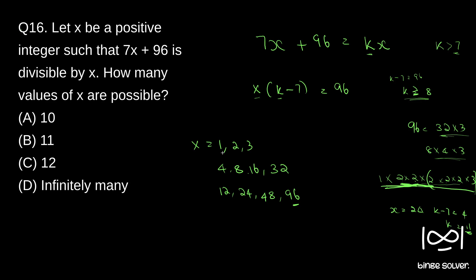Up to 96, x can take valid values. Now let's count all the combinations: 1, 2, 3, 4, 8, 16, 32 are powers of 2 divisors. Then 3 into 2 is 6, 3 into 4 is 12, 3 into 8 is 24, 3 into 16 is 48, and 3 into 32 is 96. So those are all the divisor combinations.